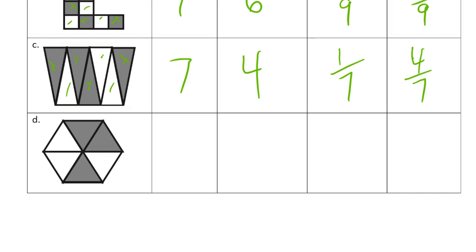And now here's another hexagon, which has six equal parts. Three of them are shaded in. Our unit fraction, since there are six equal parts, is one-sixth. And there are three units shaded in, so three-sixths of the hexagon is shaded in.